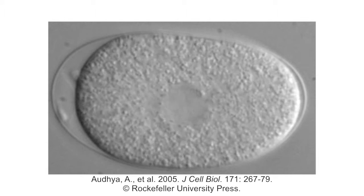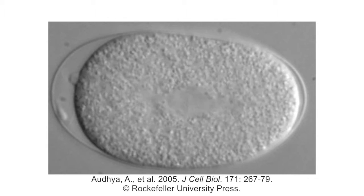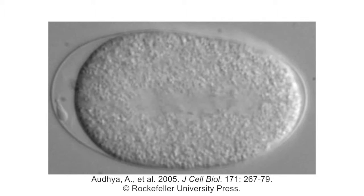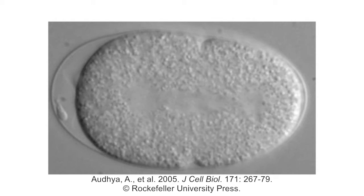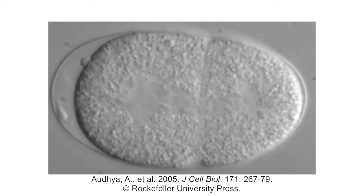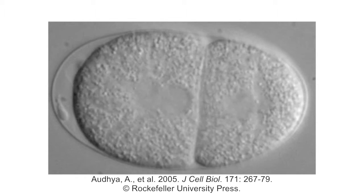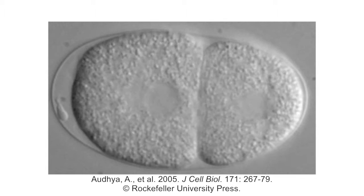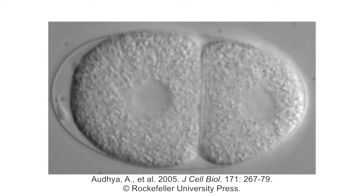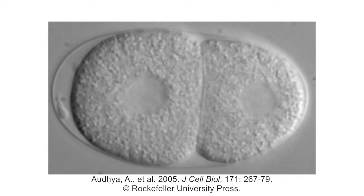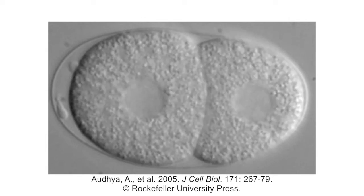One-cell C. elegans embryos divide asymmetrically by moving their mitotic spindle towards the posterior of the cell. Two spindle-based pathways involving astral microtubules and the central spindlin complex then position the cytokinetic cleavage furrow so that it passes through the spindle mid-zone, dividing the embryo into two unequally sized cells.